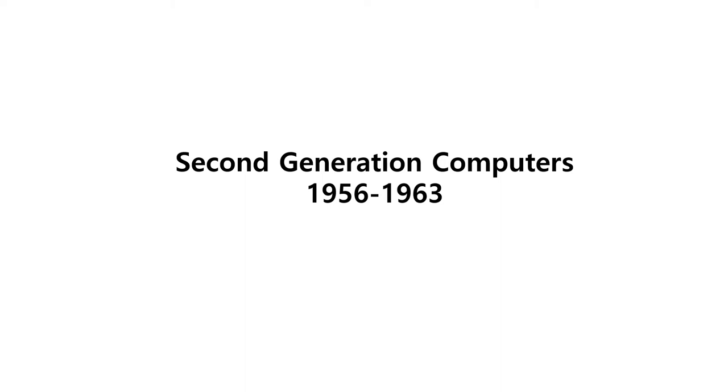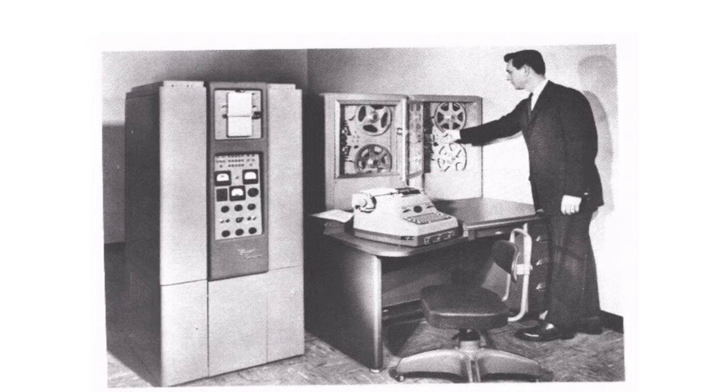Now we shall discuss about the second generation computers. The second generation era lasted between 1956 to 1963. The world should say transistors replaced vacuum tubes in the second generation of computers. The transistor was invented at Bell Labs in the year 1947, but did not see widespread use in computers until the late 1950s, almost more than 10 years of span. The transistor was far superior to the vacuum tubes, allowing computers to become smaller, faster, cheaper, more energy efficient and more reliable than their first generation predecessors.